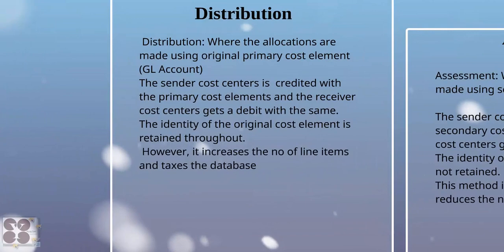In distribution, allocations are made using the original primary cost element, that is the GL account. We talked about GL account to cost element mapping in our master data section. Primary cost elements are those that are expense accounts in financial accounting. The sender cost center is credited with the primary cost element and the receiver cost center gets a debit with the same. Each time, the identity of the original cost element is retained throughout.